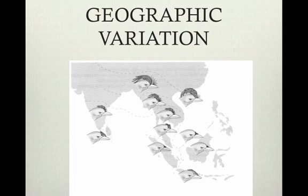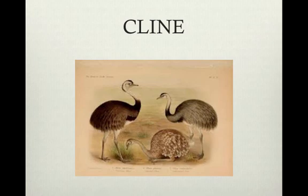Differences in gene pools between populations are observed in populations with different locations. Different environments can contribute to natural selection, changing the gene pools. This is called geographic variation. Cline is a type of geographic variation where changes are observed in a population as you move geographically. For example, as Darwin went south in South America, he observed small changes in the rhea population. Rheas are large birds similar to ostriches.